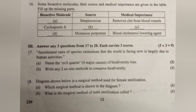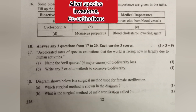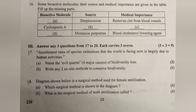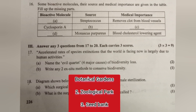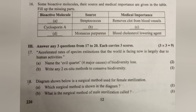Question 17: Accelerated rates of species extinction is largely due to human activities. A. Name the evil quartet — four major causes of biodiversity loss — Answer: Habitat loss and fragmentation, over exploitation, alien species invasions, co-extinction. B. Write any two ex-situ methods to conserve biodiversity — Answer: Botanical gardens, zoological parks, seed banks, cryopreservation, tissue culture — write any two.